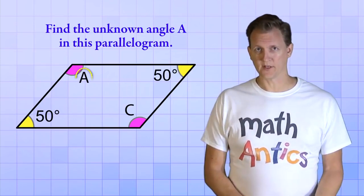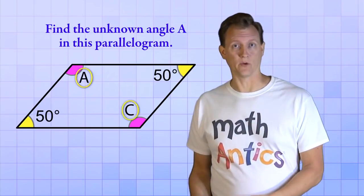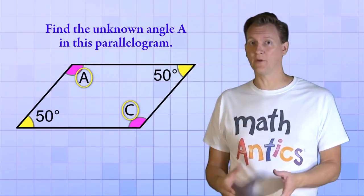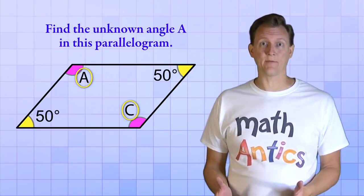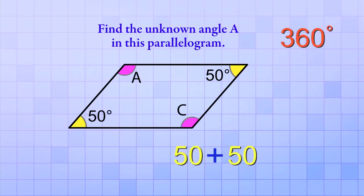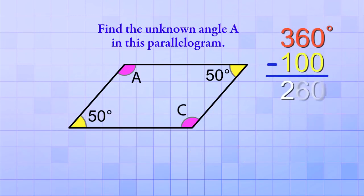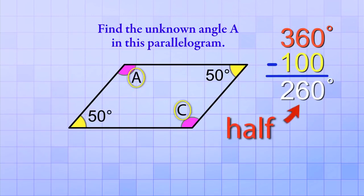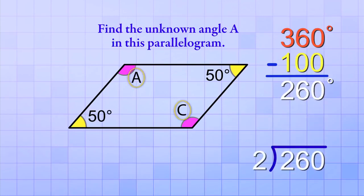Next, we know that the other two angles, A and C, must also be equal. So if we can figure out how many degrees are left over, or still unknown, we can just divide that amount equally between A and C. Well, the total of all the angles is 360. So if we subtract the angles that we know, 50 plus 50 equals 100, and 360 minus 100 equals 260, we know that A and C must each be half of 260 degrees, and 260 divided by 2 is 130, so angle A must be 130 degrees.